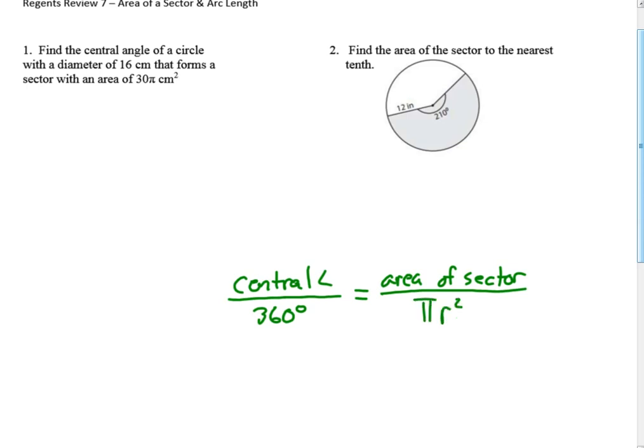A couple formulas to keep in mind with a circle: if we're talking about length, we use circumference, which is d pi, or area, which is pi r squared. Both are on the formula sheet. There's two types of questions: one, we need to find the central angle; the other, we need to find the area of the sector.